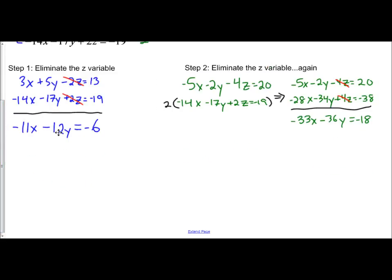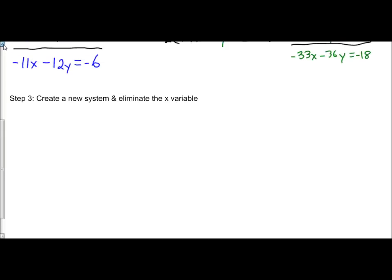Now, if I pair these two equations together, I can create a new system and eliminate one of the variables. I see negative 11, negative 33. Well, 33 is a multiple of 11. So, that's how I'm going to pair them together. Step 3 is to create a new system and eliminate the x variable. I'm going to create a new system with these equations. The equations are negative 11x minus 12y equals negative 6, and my negative 33x minus 36y equals negative 18.